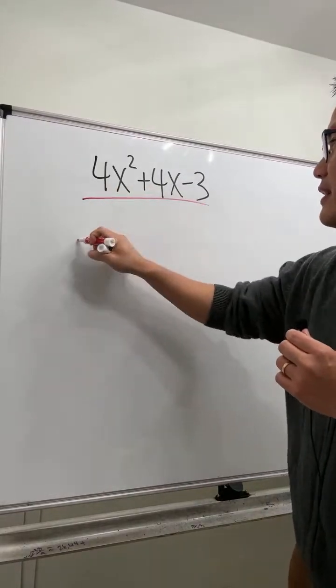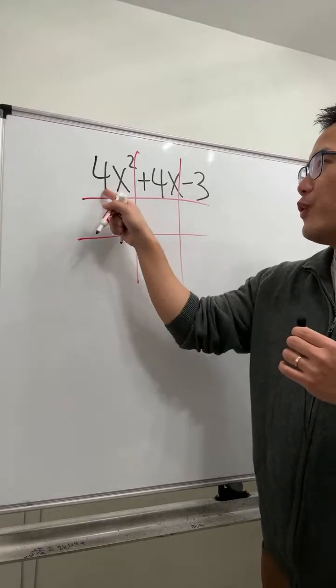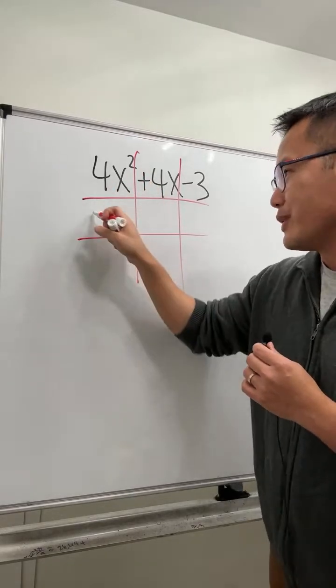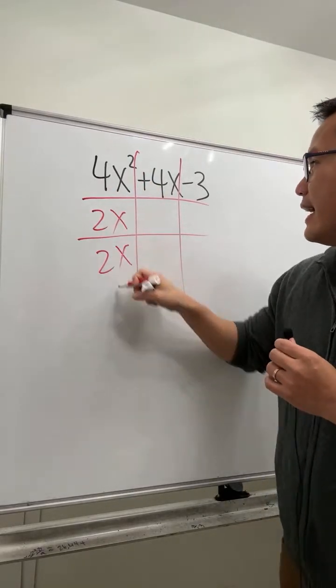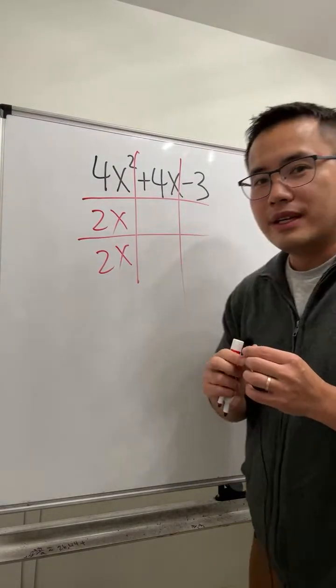minus 3. Use the tic-tac-toe method like this, and you ask yourself: what times what will give you 4x²? Let's try 2x and 2x. Then come here and ask yourself: what times what will give you negative 3?